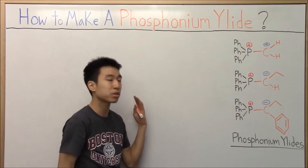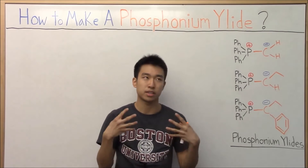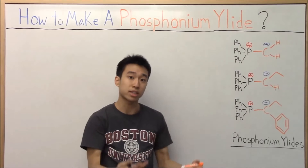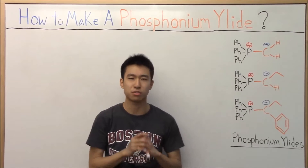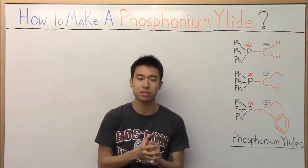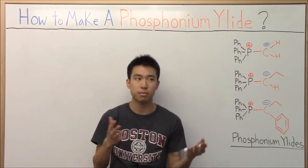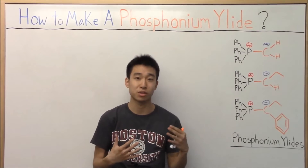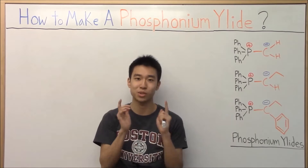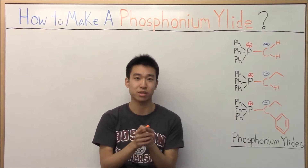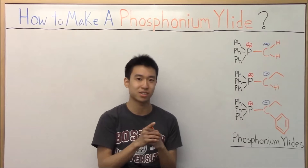I'll show you guys how you can make each specific type of ylid, so you can make specific types of alkenes eventually in the Wittig reaction. First things first, I want you guys to take a couple seconds — think back to lecture and your notes, but don't look at them — and just think about how do you make a ylid and see what you can remember. Hit pause and come back.